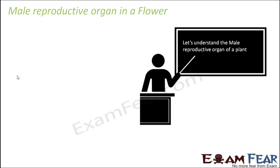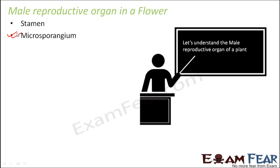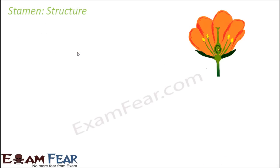In the male reproductive organ, we will talk about these important parts: the stamen — a group of stamens form the androecium — the microsporangium, which is a structure inside the stamen where the actual gamete formation occurs, and the pollen grains, which are the male gametophyte, meaning they are the structures that contain the male gamete.